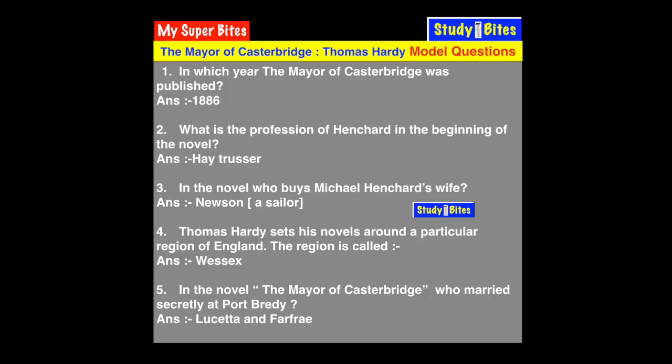Question 5: In the novel The Mayor of Casterbridge, who married secretly at Port Bredy? The answer is Lucetta and Farfrae — they married secretly at Port Bredy.